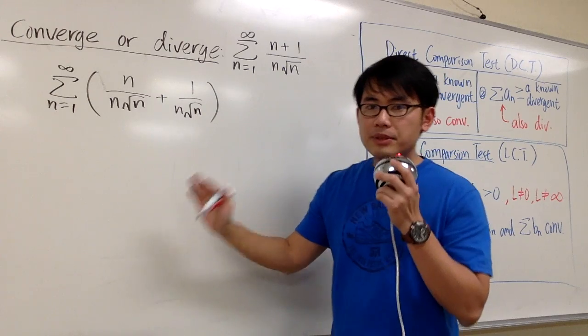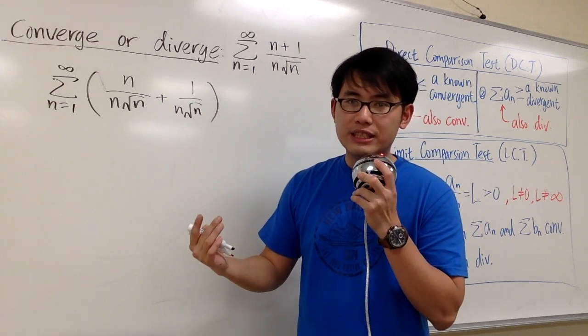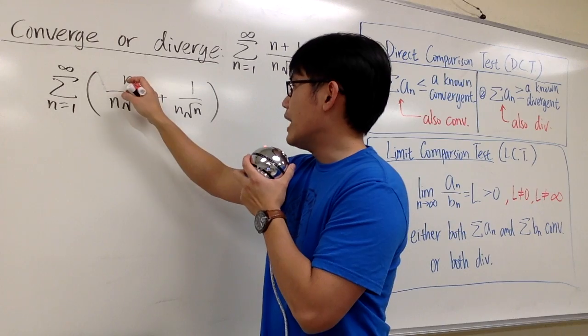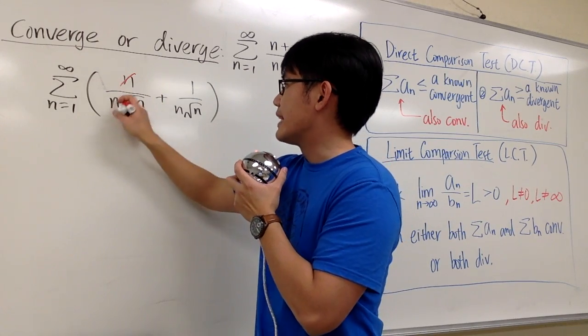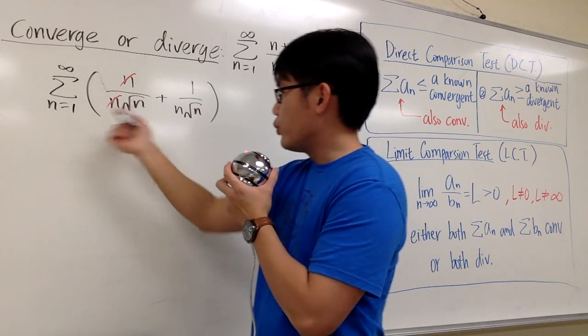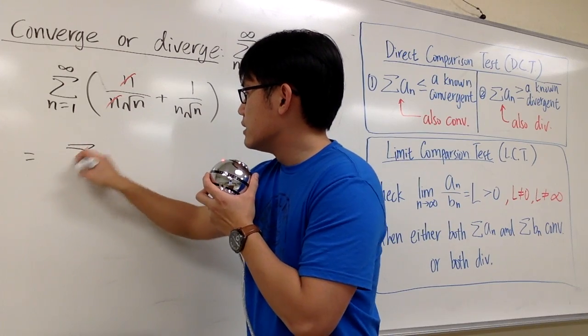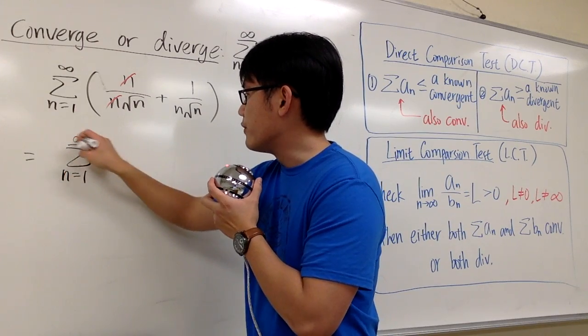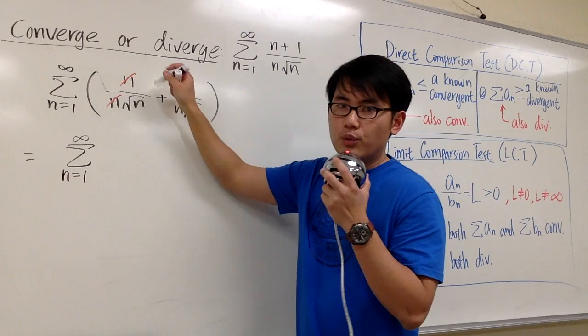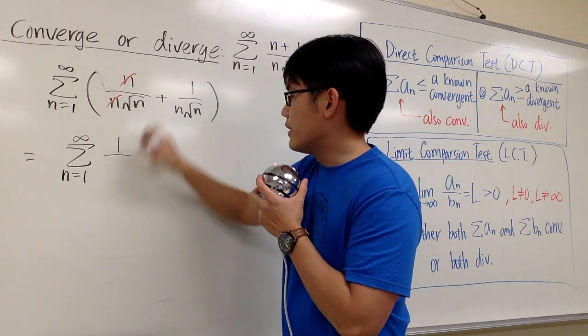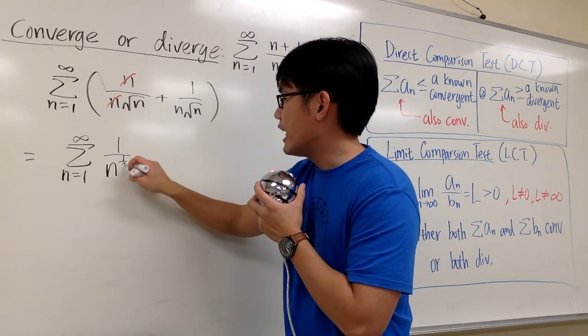And now let's observe these two as two individual series. For the first one, we have the n over n, of course they cancel each other right away, and then we can look at this as sigma when n goes from 1 to infinity. This is just 1 over square of n, which is n to the one-half power.